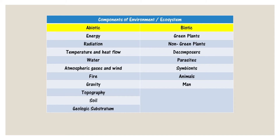To summarize the components: abiotic components include energy, radiation, temperature, heat flow, water, atmospheric gases, wind, fire, gravity, topography, soil, and geologic substratum. Biotic components include green plants, non-green plants, decomposers, parasites, symbionts, animals, and even humans.